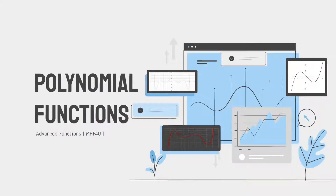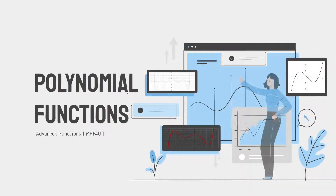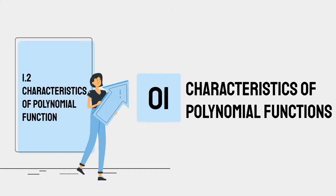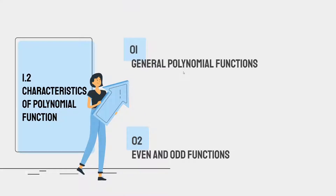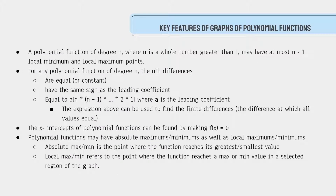Hello everybody, and welcome back to Polynomial Functions as part of the Advanced Functions course. Today I will be showing you Chapter 1.2 of the McGraw-Hill textbook, which is the characteristics of polynomial functions. The whole chapter covers different characteristics, but I will split it up into two parts. The first part will be the general parts of polynomial functions, as well as even and odd functions. So let's begin.